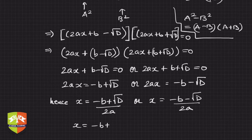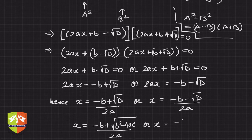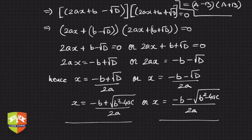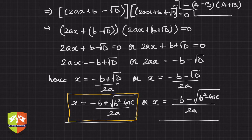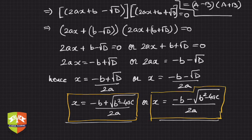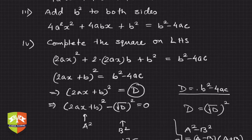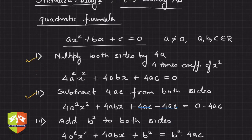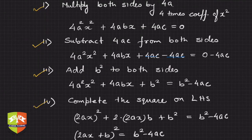Substituting the value of D, we get x = (−b + √(b² − 4ac)) / 2a or x = (−b − √(b² − 4ac)) / 2a. These are the two solutions of the given quadratic equation — this is Sridharacharya's method. To recap: multiply both sides by 4a, subtract 4ac from both sides, add b² to both sides, complete the square, then factorize and solve.